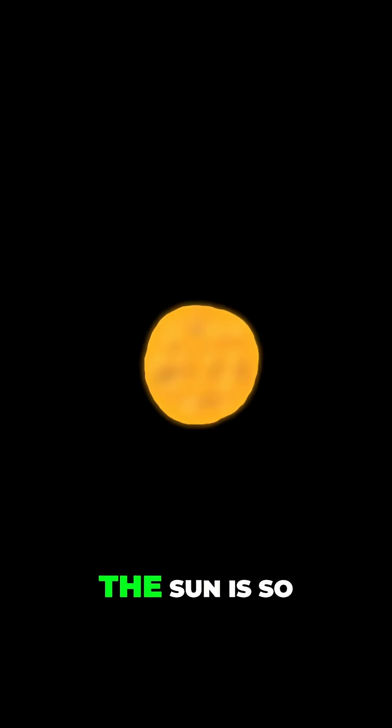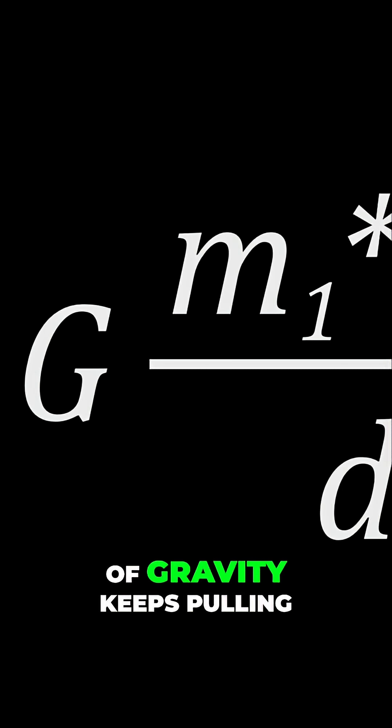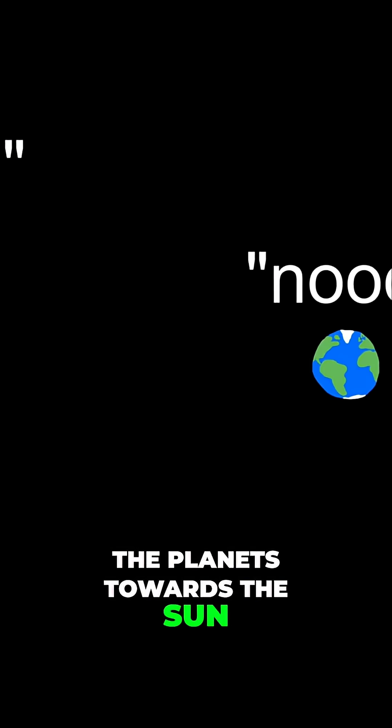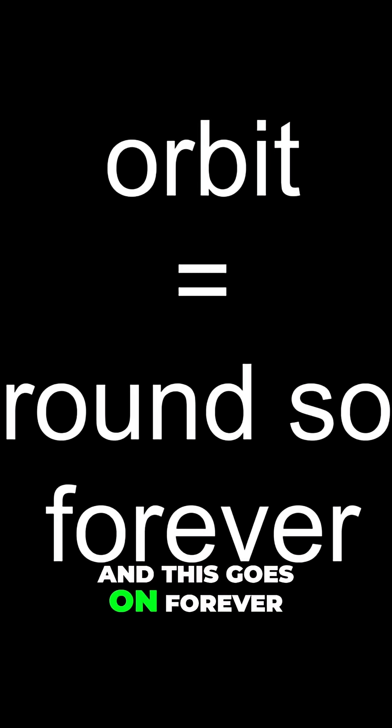Hey, that's Newton's first law. The sun is so massive that the force of gravity keeps pulling the planets towards the sun, but the planets are fast enough to essentially fall towards the sun, but miss it, and this goes on forever, creating a round orbit.